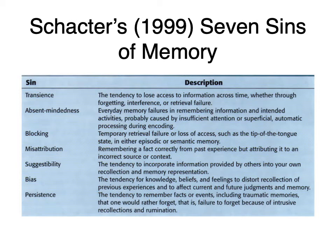Usually it's temporary — it's blocked from being retrieved because something else is competing with it. So the first three of these seven sins are about the inability to remember something: failure to retrieve.